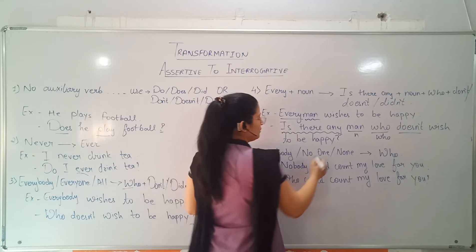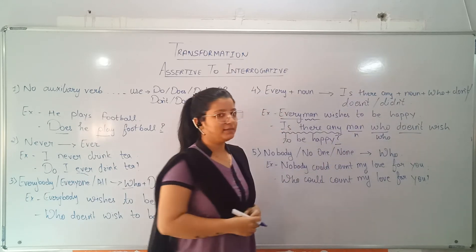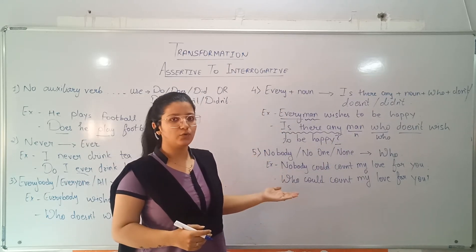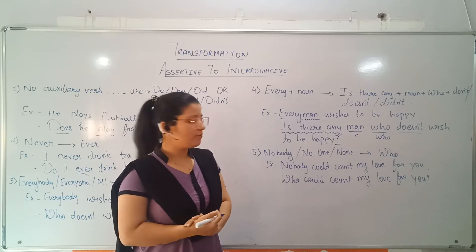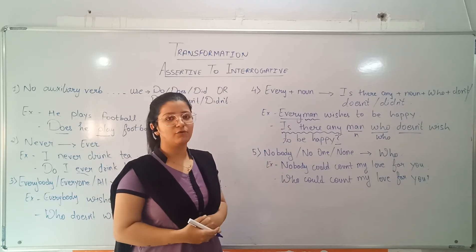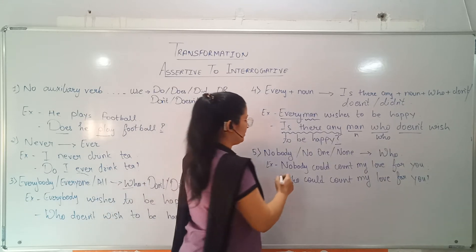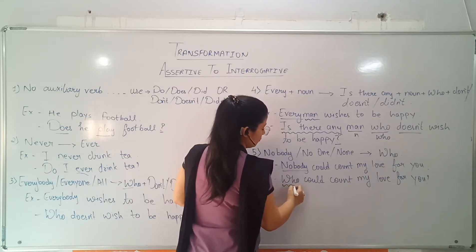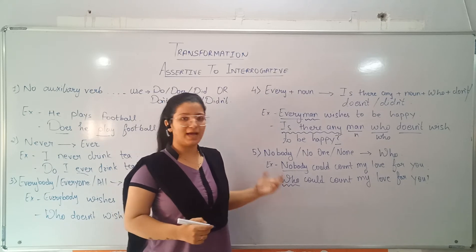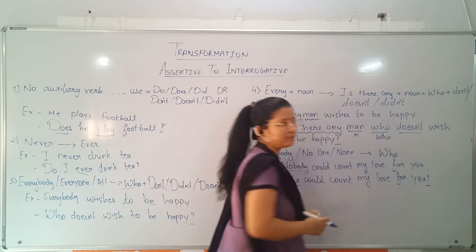Next, 'nobody', 'no one', and 'none' will be replaced with 'who'. For example, 'Nobody could count my love for you.' Here, 'nobody' is replaced with 'who': 'Who could count my love for you?' and the sentence ends with a question mark.